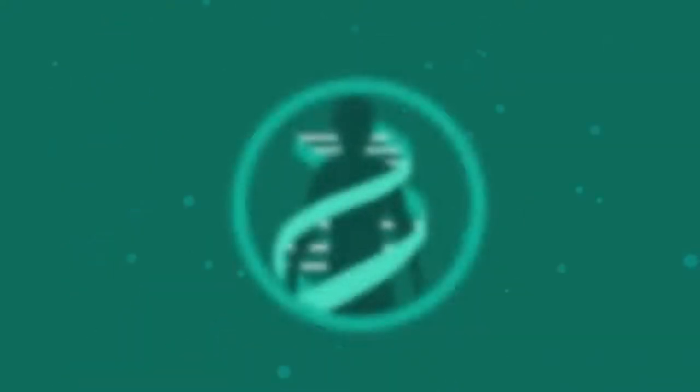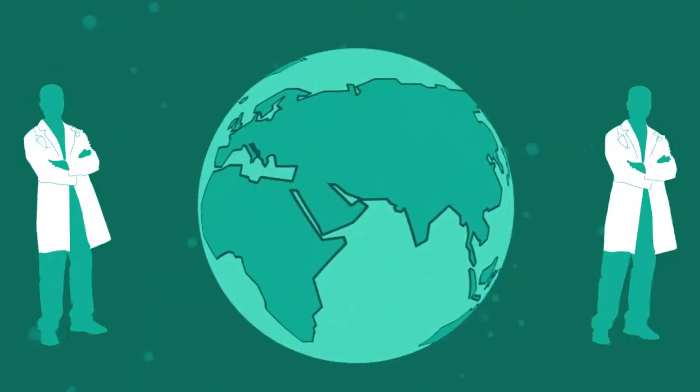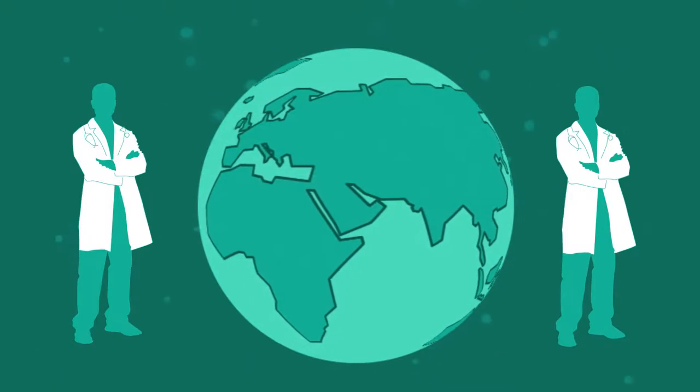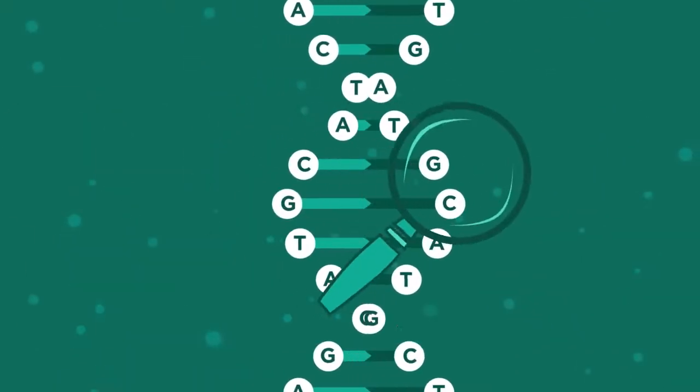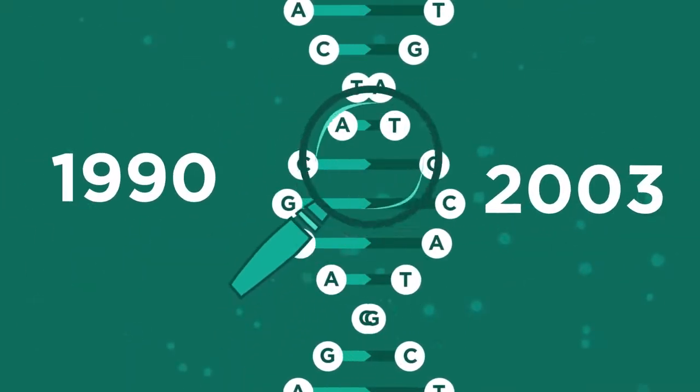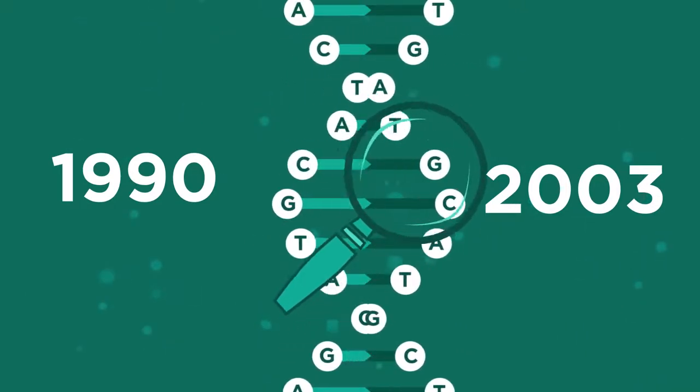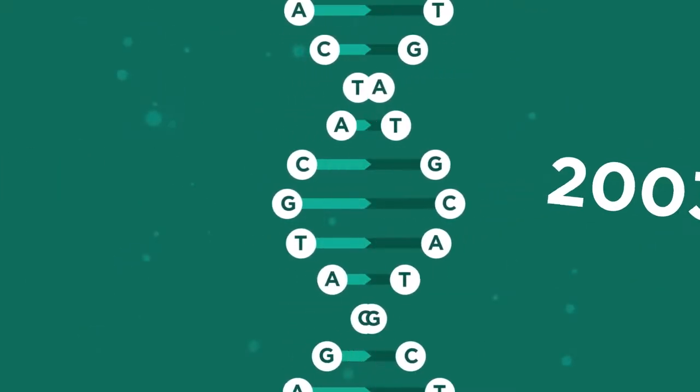The Human Genome Project was an enormous project that saw scientists around the world collaborate to work out the sequences of bases in the human genome. The project started in 1990 and was completed by 2003, two years ahead of schedule.